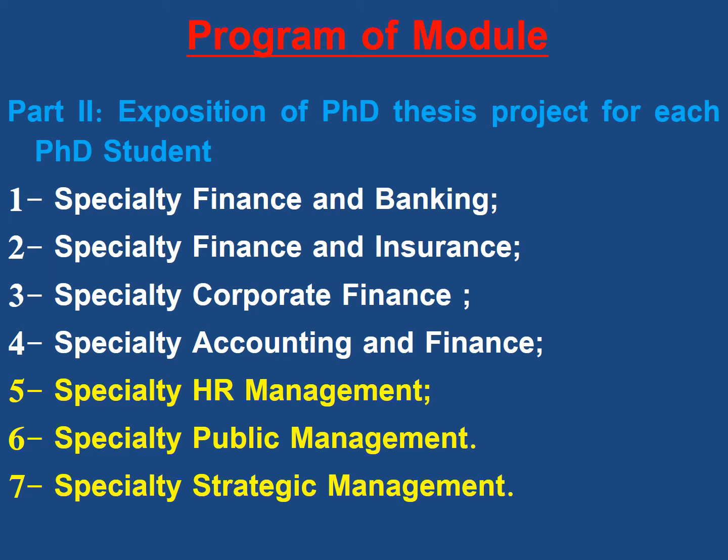The specialties are as follows: for financial sciences and accounting — finance and banking, finance and insurance, corporate finance, and accounting and finance. For management sciences — human resource management, public management, and strategic management. The total number of specialties across both fields is seven. The first field is shown in white color and the second field in yellow color.